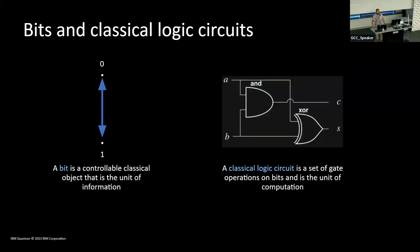Old school computing: we've got binary bits, zeros and ones. That is the basic unit of information. We also have classical logic circuits, which are a set of gate operations on bits. This is the unit of computation in a classical von Neumann framework.